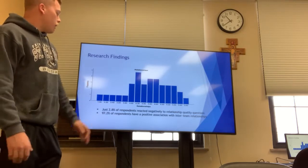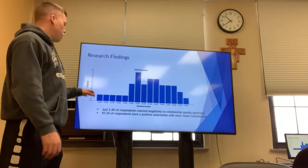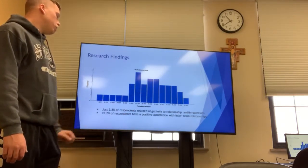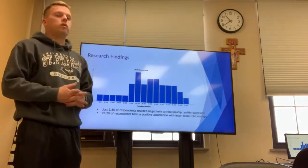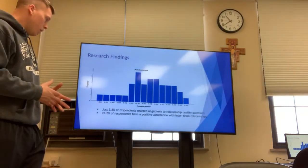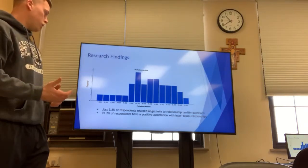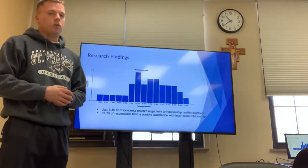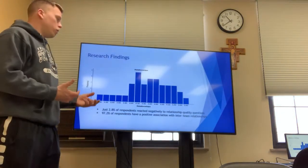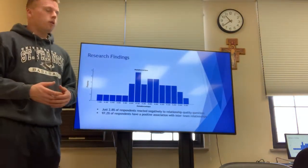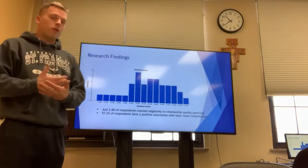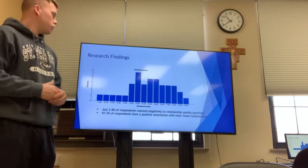Our last construct is relationship quality. You can see a pretty good bell curve within this chart. It tells us that just 2.8% of respondents reacted negatively to our questions about relationship quality, and conversely about 97.2% of respondents had a positive association with the questions we posed about inter-team relationships. These are very convincing numbers — it tells us that relationships are very important to student athletes in general.